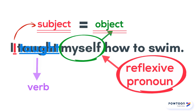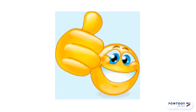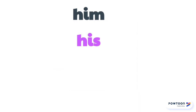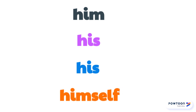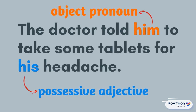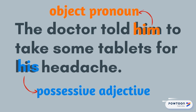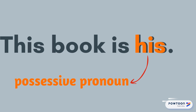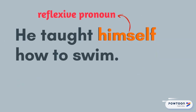Once you've understood this, it should be fairly easy to learn the other types of pronouns and possessive adjectives. For example: him, his, his and himself. 'The doctor told him to take some tablets for his headache.' 'This book is his.' 'He taught himself how to swim.'